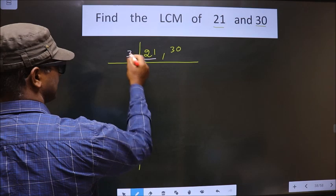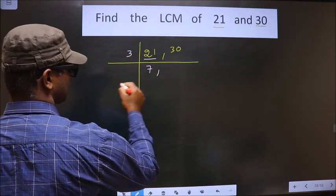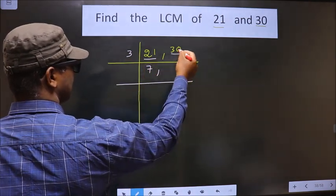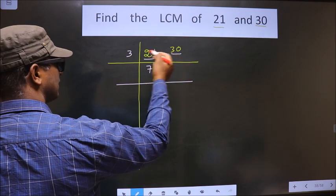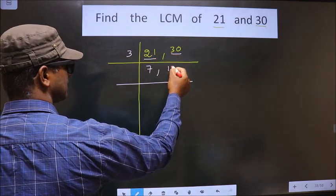21 is nothing but 3 times 7 is 21. Here we have 30. When do we get 30 in the 3 table? 3 times 10 is 30.